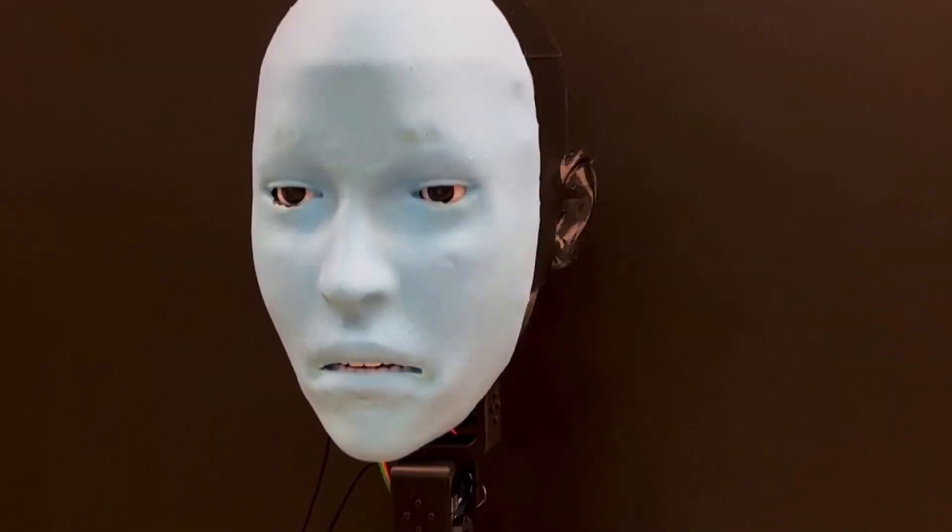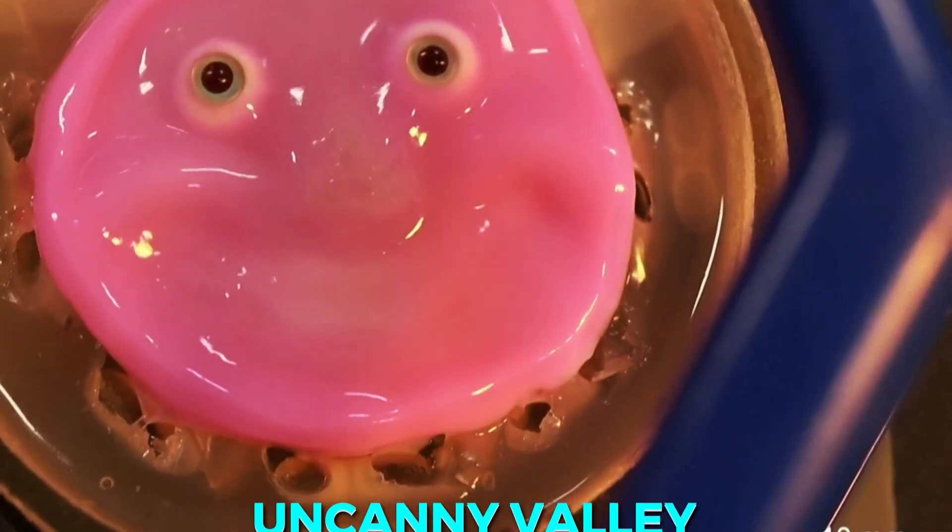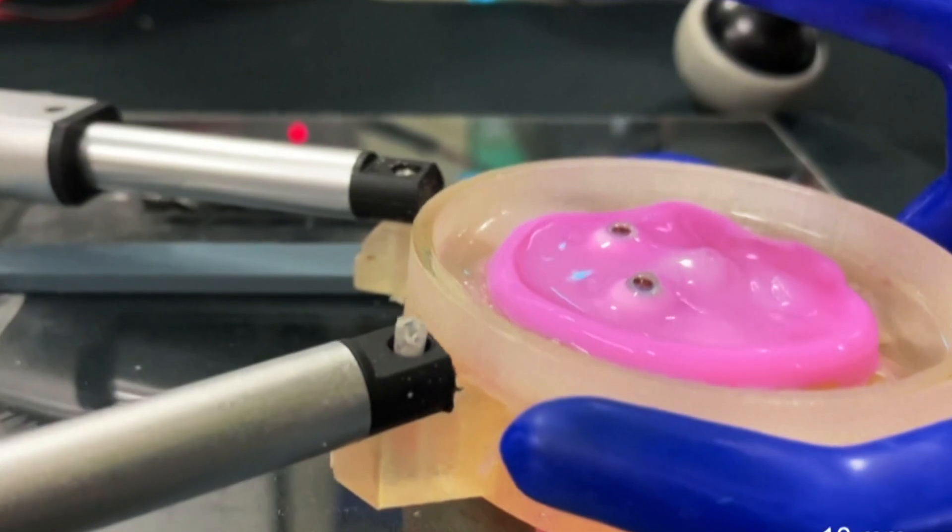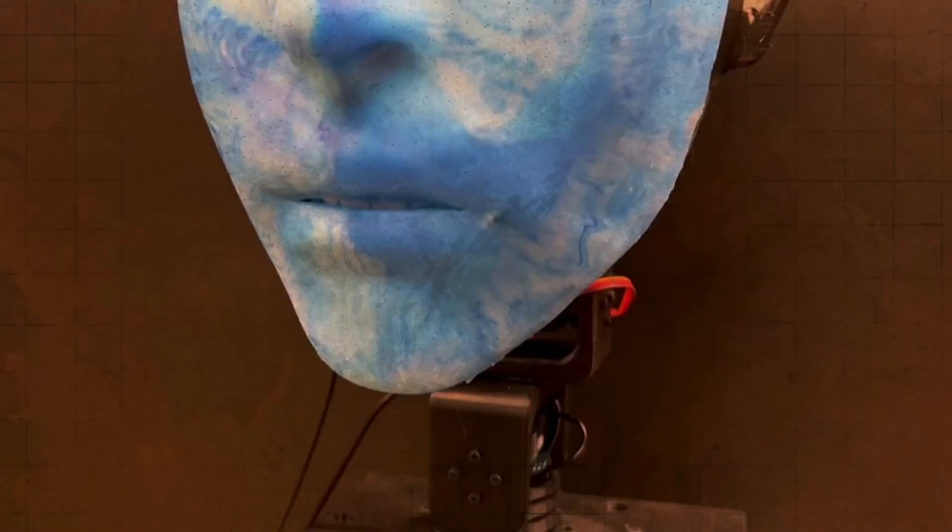However, creating a truly lifelike robot is no easy feat. One of the biggest hurdles is the uncanny valley, a phenomenon where robots that look almost human but cannot quite evoke feelings of unease and discomfort in people.